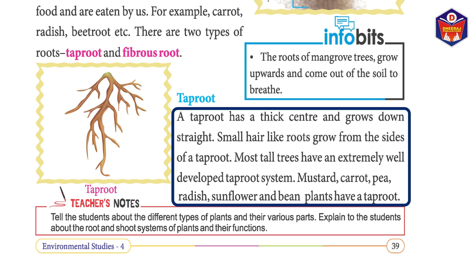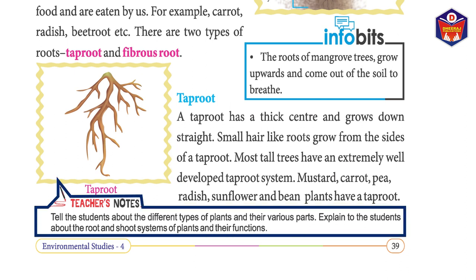Small hair-like roots grow from the sides of a taproot. Most tall trees have an extremely well-developed taproot system. Mustard, carrot, pea, radish, sunflower, and bean plants have a taproot. Teachers should tell students about the different types of plants and their various parts, and explain the root and shoot systems and their functions.